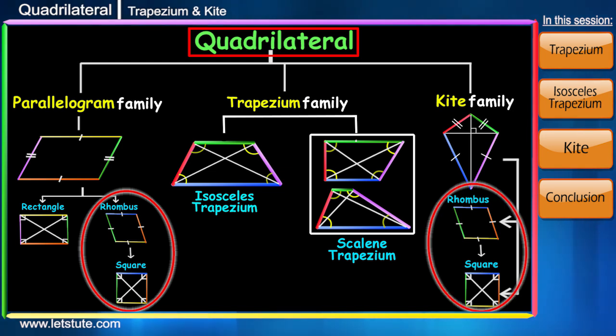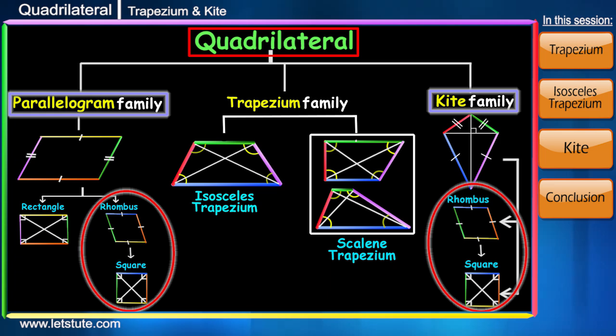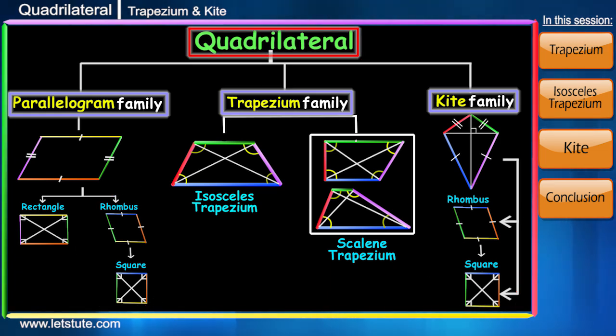Rhombus and square are in relation with two families: parallelogram and kite. All these families live in a town called quadrilateral.